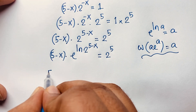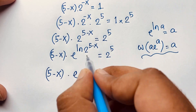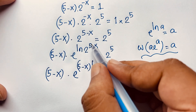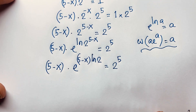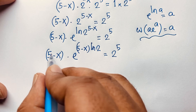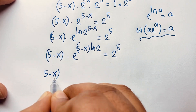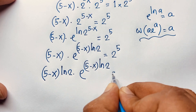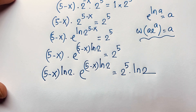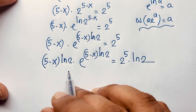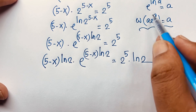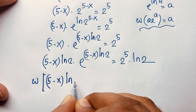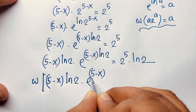The expression becomes: (5 minus x) times e to the power ((5 minus x) times ln2) is equal to 2 to the power 5. I moved the exponent using the natural log law. Now there is no ln2 on the right side, so I multiply both sides by ln2, giving: (5 minus x) times ln2 times e to the power ((5 minus x) times ln2) is equal to 2 to the power 5 times ln2. Now I apply the Lambert W function.